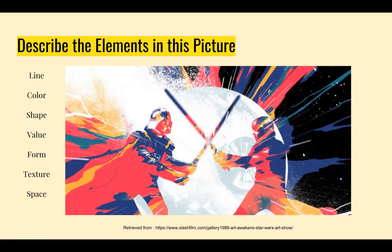Shape is a little bit more complex — it's sort of mixed in with the line. You can see the outline shape of each of the figures, the outline shape of the lightsabers, and the shape of the circle — the Death Star — in the background. The value is very clear-cut in this picture. The white and light gray in the center is a light value, the black is the darkest value, and over here you would consider this a medium value — sort of in between light and dark.